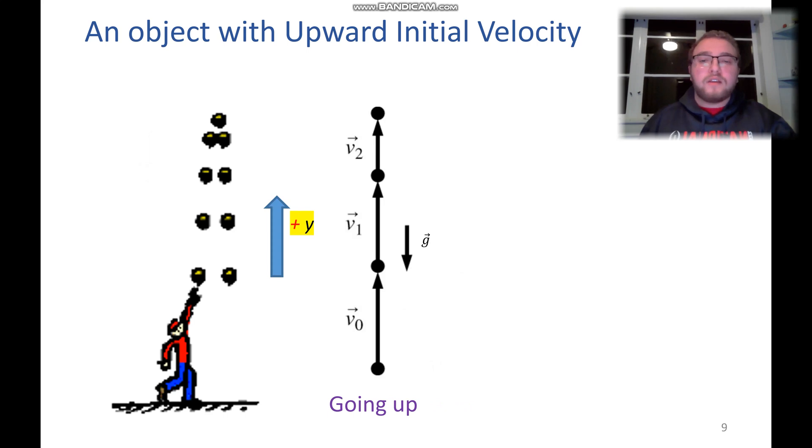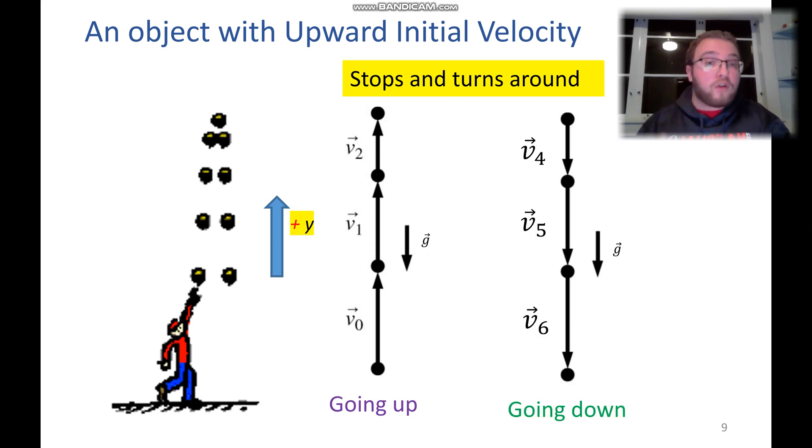And gravity slowly eats away at it and our velocity vectors shrink a little bit each time until we're left with an object with no velocity. That's when it stops and turns around and falls down.